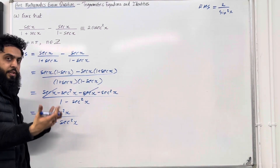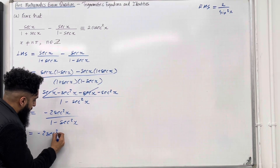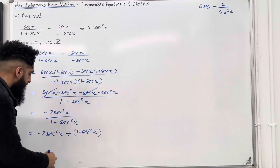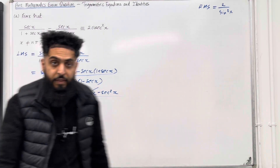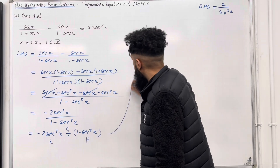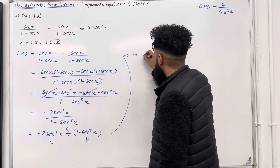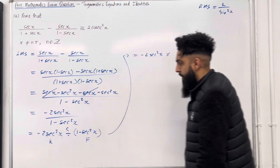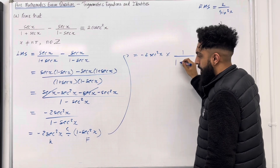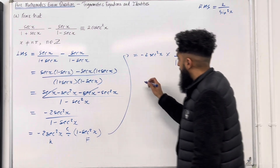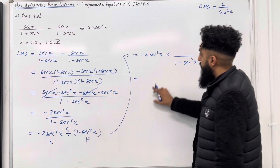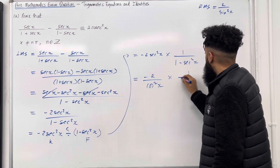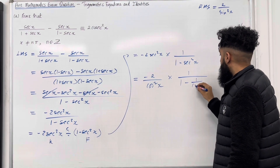Instead of a fraction, I'm going to write the operation as division. So I've got minus 2 sec squared x divided by 1 minus sec squared x. To carry out the division I can use keep, change, flip — that's my GCSE knowledge. So I keep the first term, minus 2 sec squared x, division changes to multiplication, and I take the reciprocal of the second term, giving 1 over 1 minus sec squared x. Now I can introduce sec squared x in my proof: minus 2 sec squared x is the same as minus 2 over cos squared x, multiplied by 1 over 1 minus 1 over cos squared x.